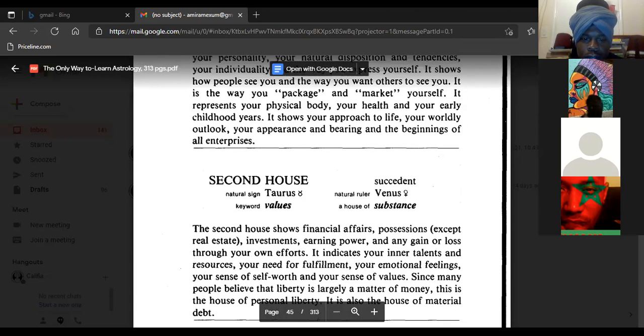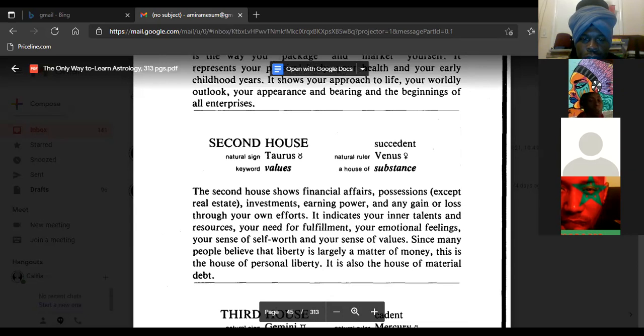Second house, natural sign Taurus. The second house shows financial affairs, possessions except real estate, investments, earning power, and any gain or loss through your efforts. It indicates your inner talents and resources, your need for fulfillment, your emotional feelings, your sense of self-worth and your sense of values.